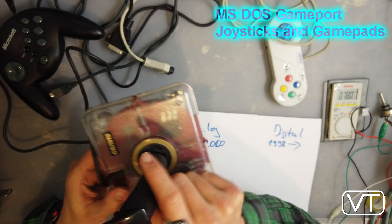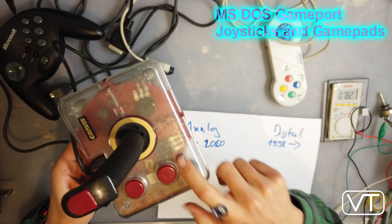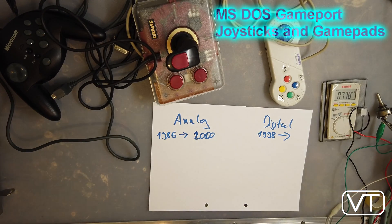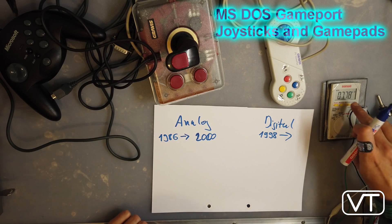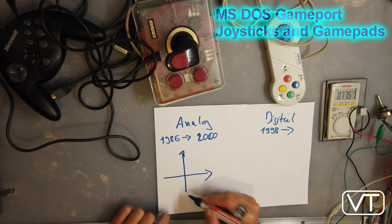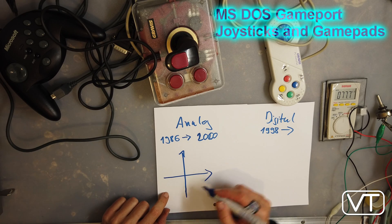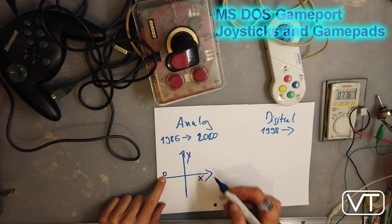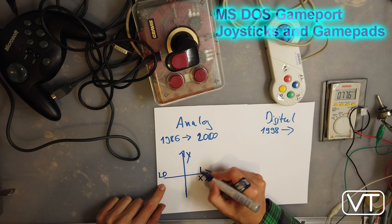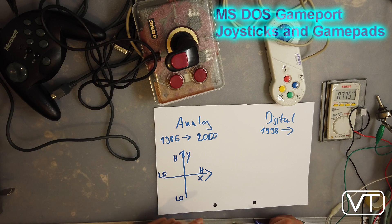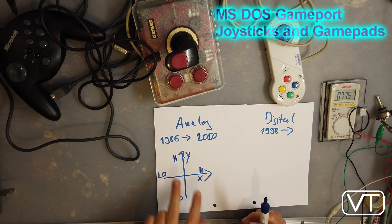You have here the potentiometers — here's one and here's also another one. And when I turn the handle, then the voltage changes because the resistance is different. For example, you get a very low voltage here, and when you turn the potentiometer, you get a high voltage. And that's on the other axis the same — low voltage, high voltage. And this information is used to define the position of the cursor or of your spaceship in a program.